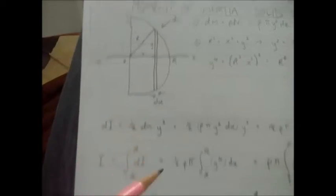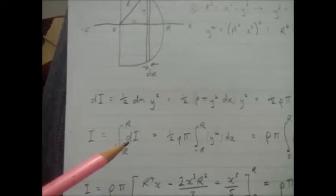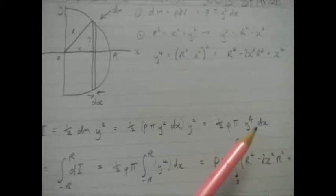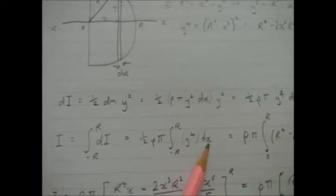So I swap my dI here. Remember ½ρ and π are constants, so they can come outside the integral, and I end up with my limits and the integral of y⁴ with respect to dx.